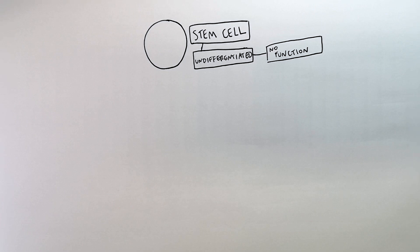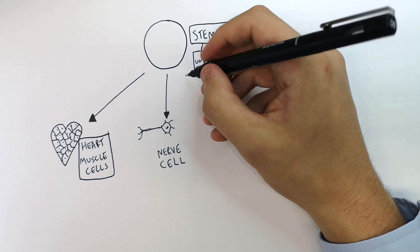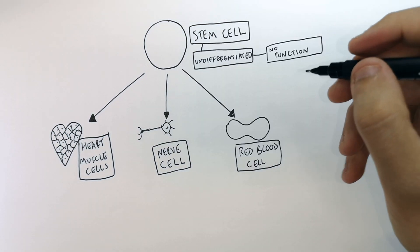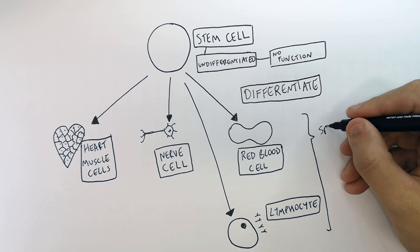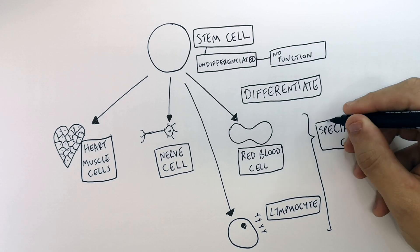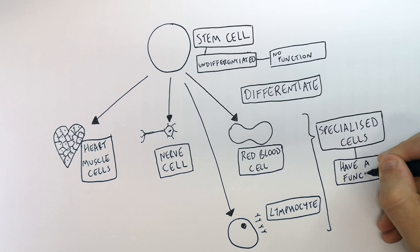Stem cells can differentiate into heart muscle cells, nerve cells, and other specialized cells like red blood cells and lymphocytes. So stem cells will differentiate into specialized cells.